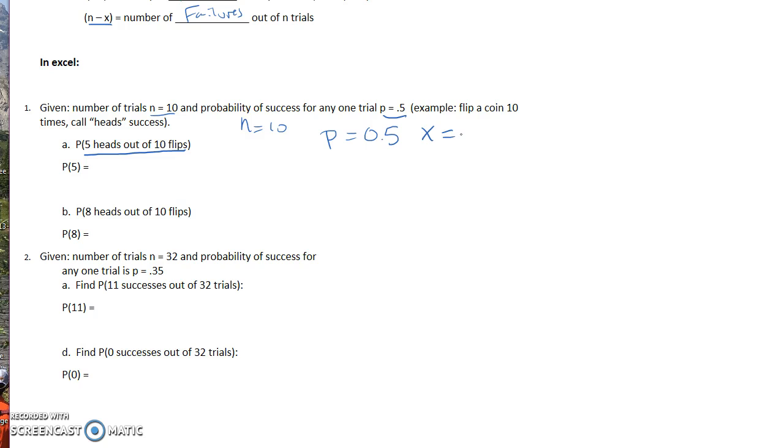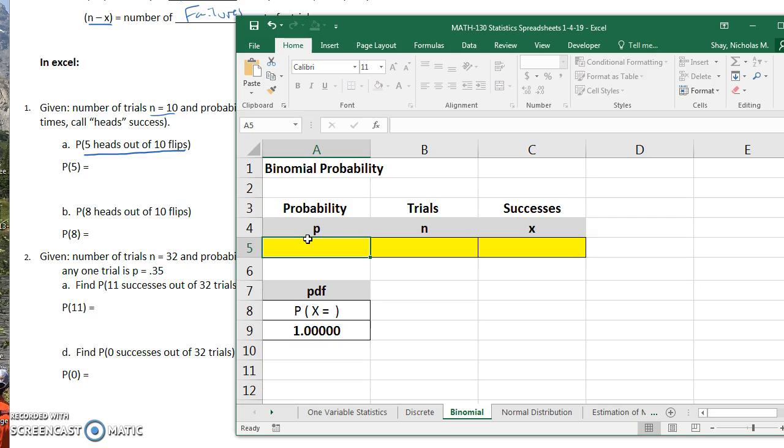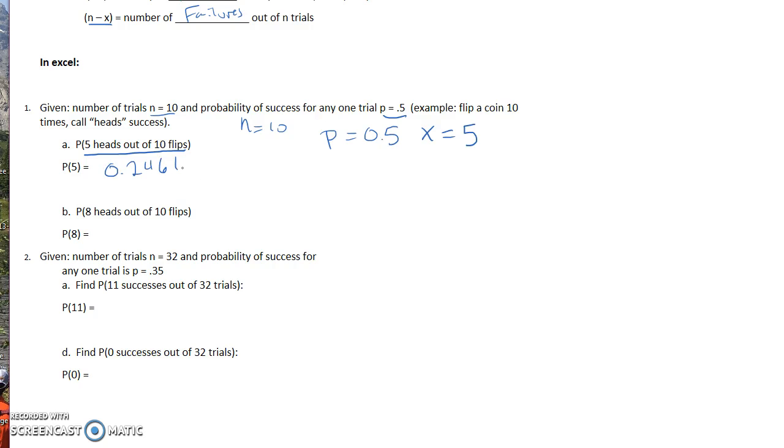So how many successes would I want? This time, the number of successes I want would be five. So I'm going to go to the Excel worksheet, and P is going to be 0.5, N is the number of trials we said we're going to flip the coin 10 times, and we wanted exactly five successes. And that gives us a probability of 0.24609. We'll round this four places. 0.2461.